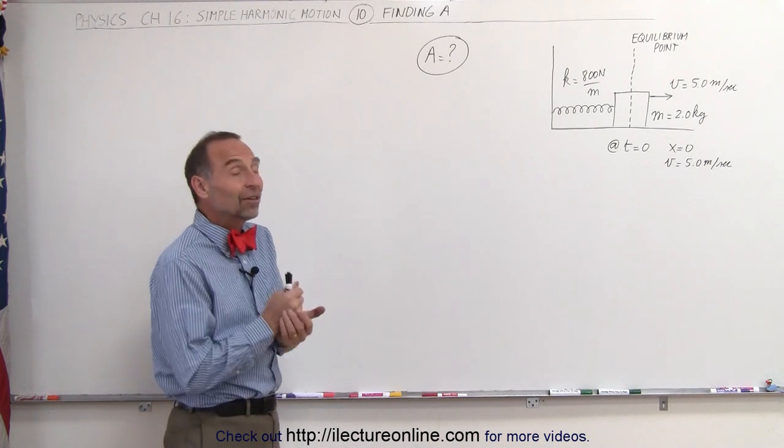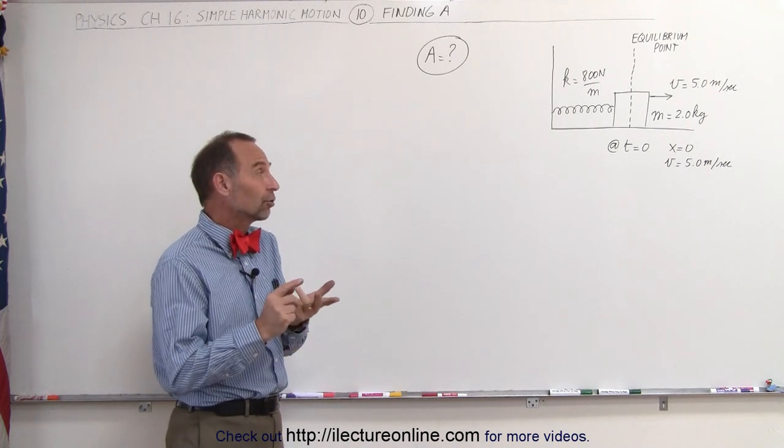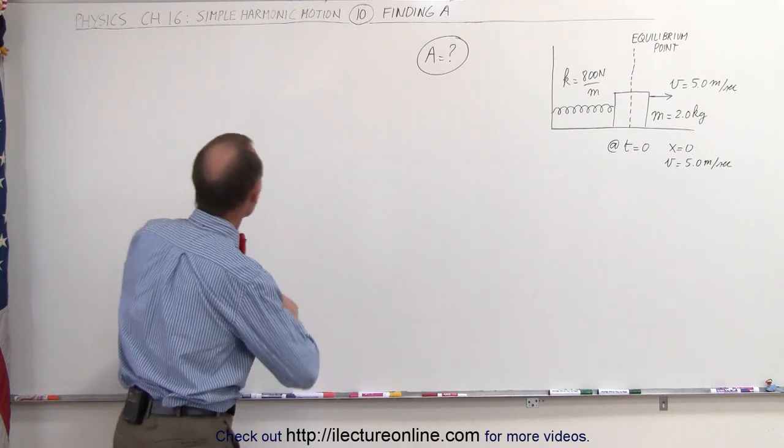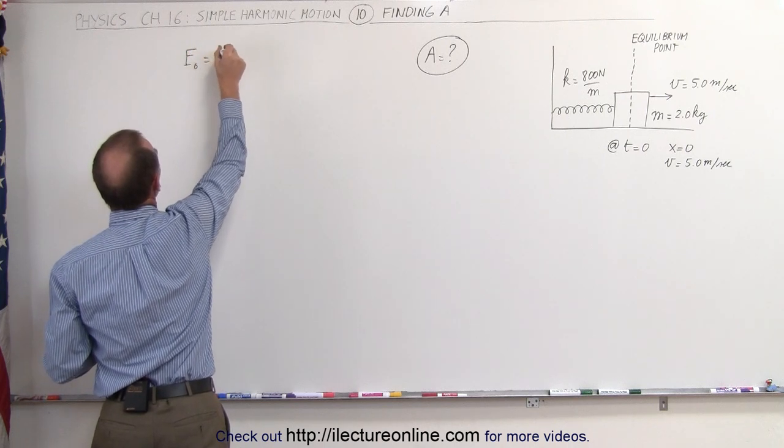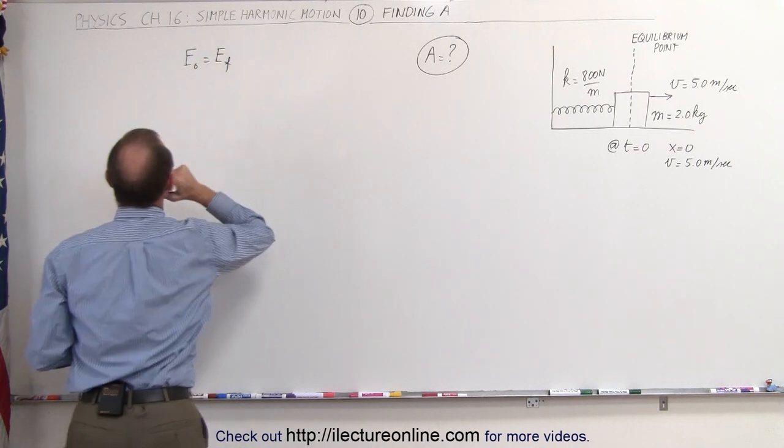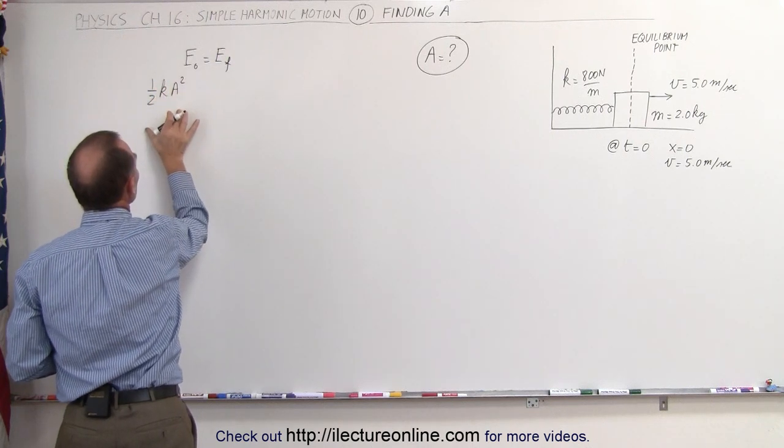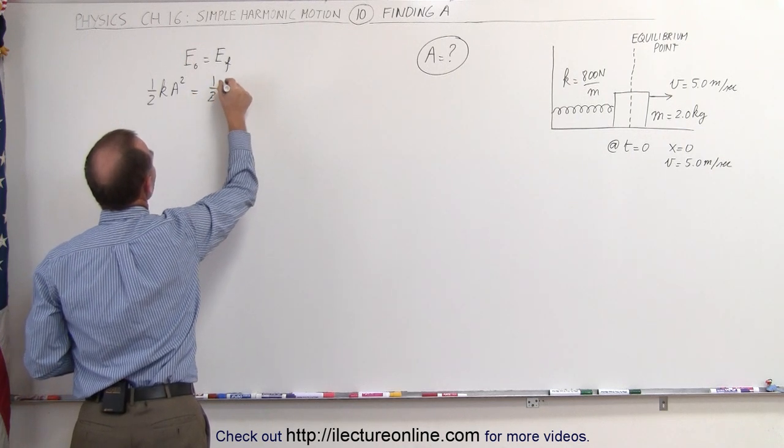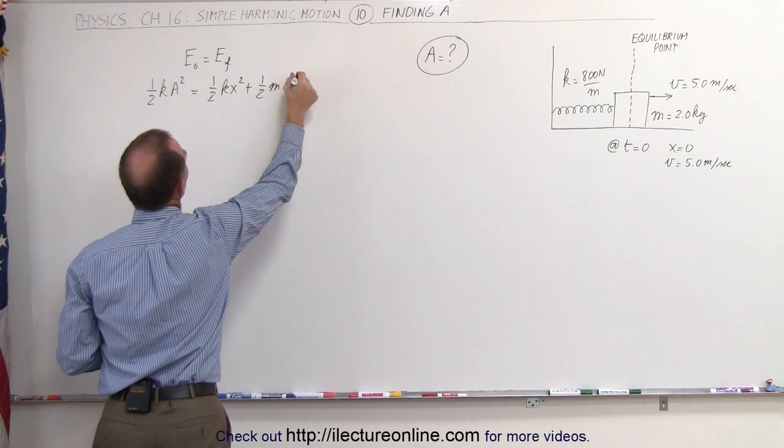Now the amplitude of the oscillation is not a function of time, it's a function of the initial velocity, it's a function of position. So therefore I'm going to use the energy equation. We can say that energy initial is equal to energy final, and we can say that one-half ka squared, which is the initial energy put into the system, is equal to one-half kx squared plus one-half mv squared.